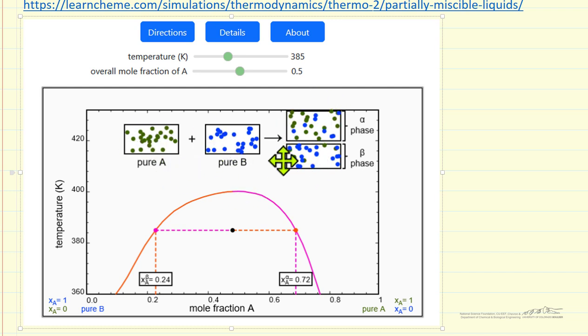The boxes on the right show these two phases. One phase, the beta phase, has mostly the blue molecules. The alpha phase has majority green molecules.